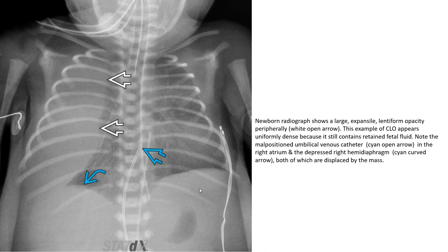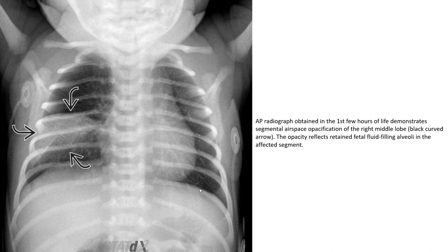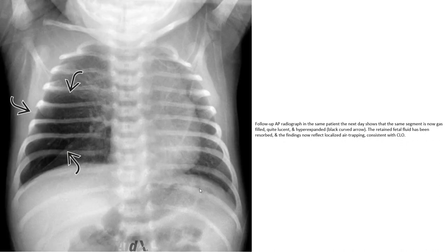Newborn radiographs show a large, expansive, lucent opacity peripherally. This is an example of CLO appearing uniformly opaque initially because it still contains retained fetal fluid. An AP radiograph obtained in the first two hours of life demonstrated segmental airspace opacity of the right middle lobe, reflecting retained fetal fluid. A follow-up AP radiograph of the same patient the next day shows that the same segment is now gas-filled, quite lucent, and hyperexpanded.